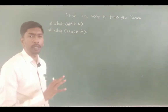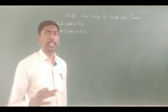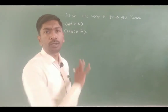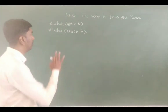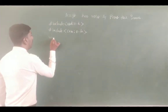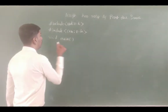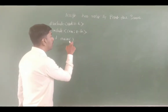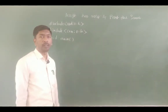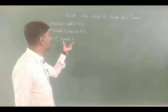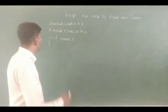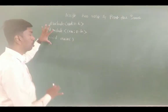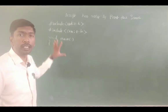This header file is compulsory. You have to start writing these two lines. This is called a function — void main. After that, you have to open the flower brace (curly brace). These three lines are compulsory in every program.